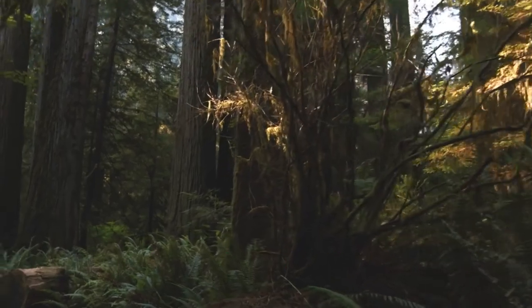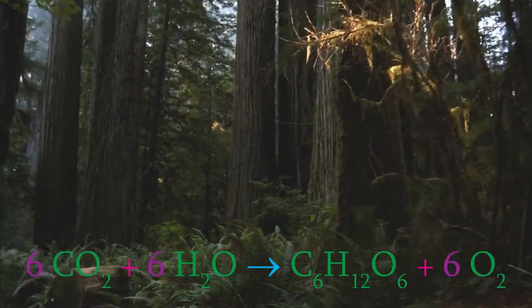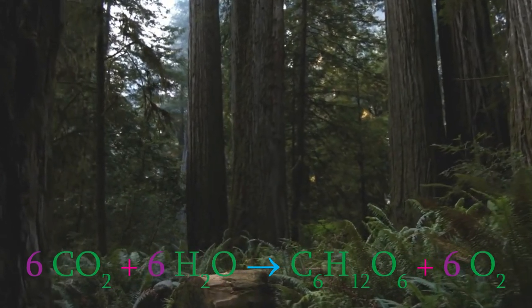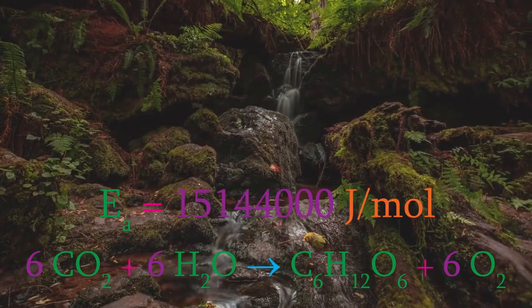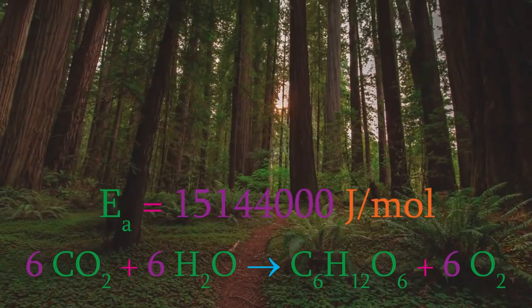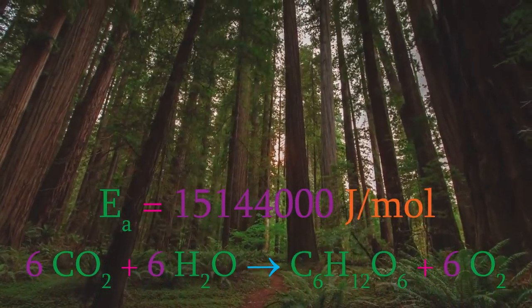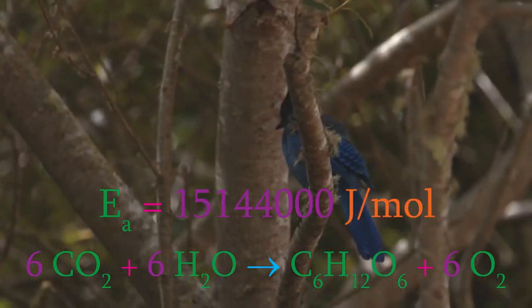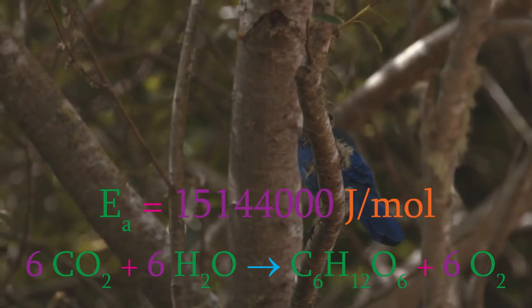For example, this chemical reaction is the overall reaction taking place during photosynthesis. It has an incredibly high activation energy of 15,144,000 joules per mole. That kind of energy is never available in a living cell, so a series of enzymes is necessary to lower the activation energy to something more manageable.